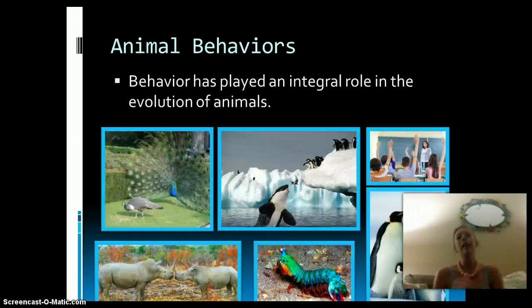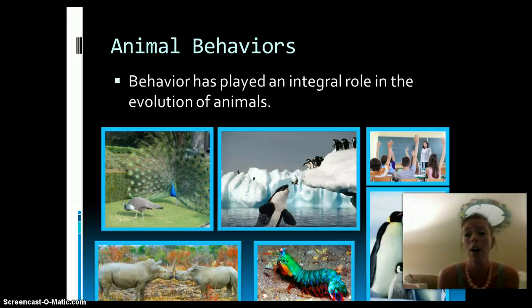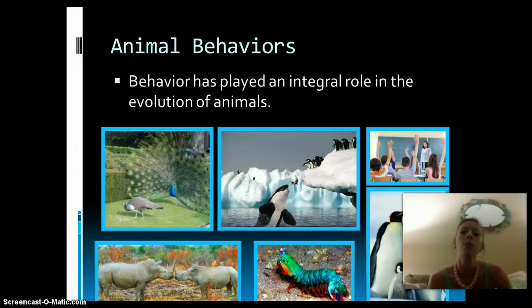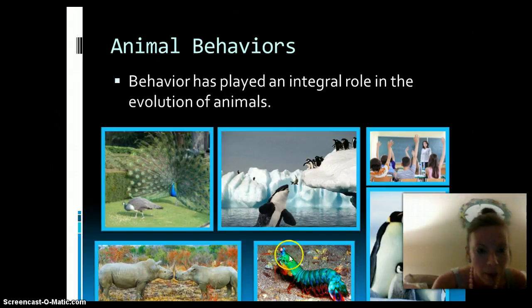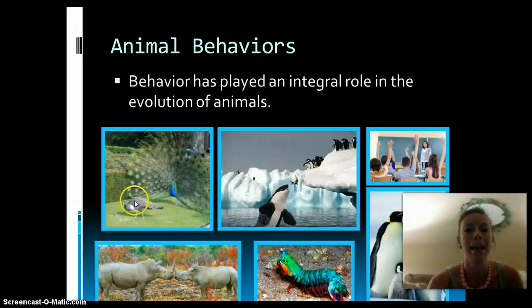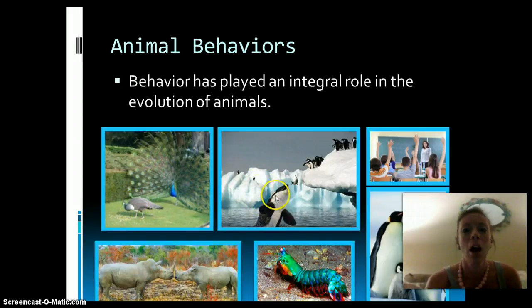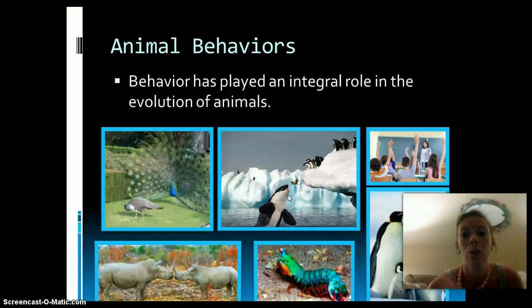Animal behaviors have played an integral role in the evolution of animals. The reason animals behave the way they do is so that they can survive and reproduce. This peacock is displaying its feathers for its peahen so it can pass on its genetic information. Orcas have found many complex, awesome strategies to hunt, and they teach their young — so they can survive and reproduce.